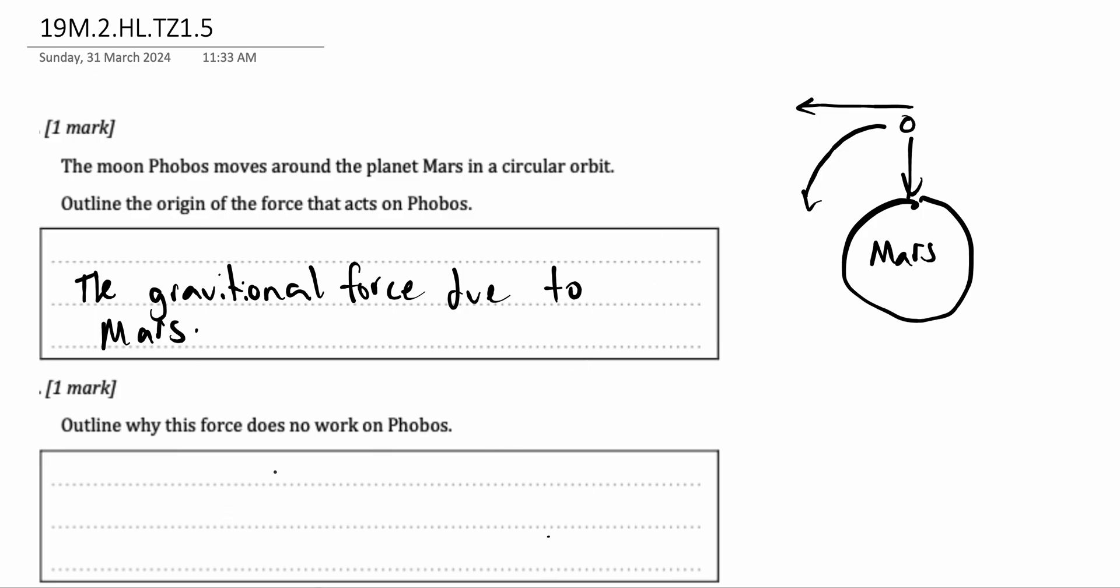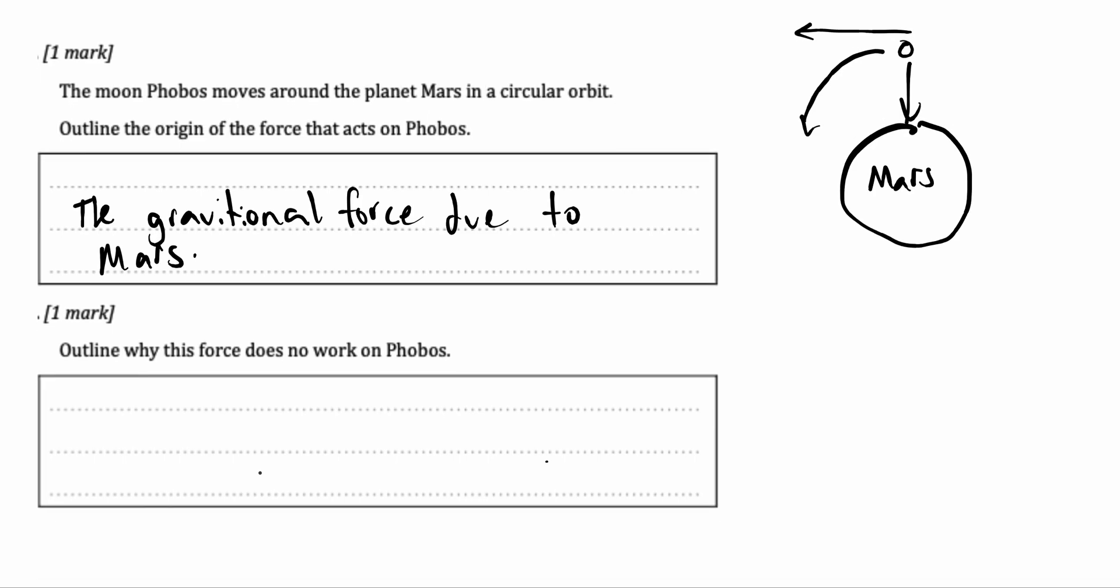Outline why this force does no work on Phobos. Now I want you to recall what is the equation for work. It's in your data booklet but I'll also give it to you. It is work equals Fs times cos theta where F is the force, S is the displacement and cos theta is the angle at which the force acts. So there is some force, there is some displacement but yet still work is equal to zero. Why?